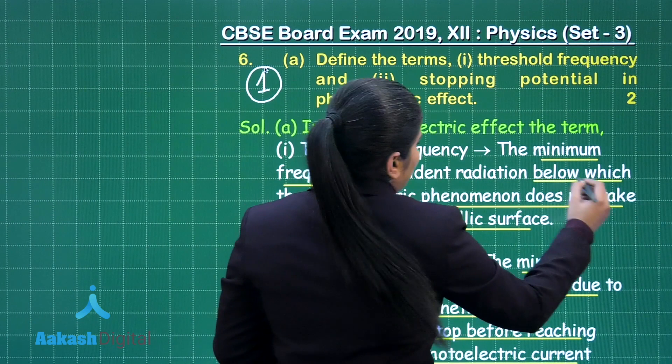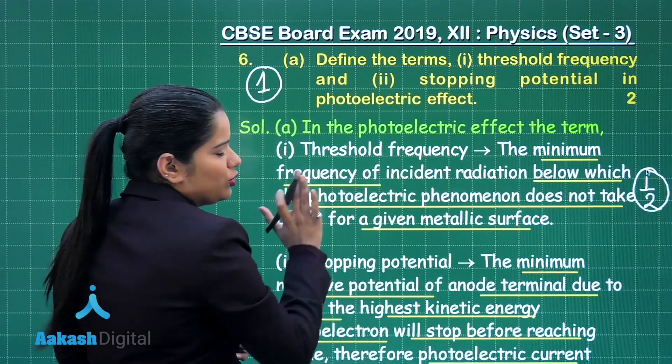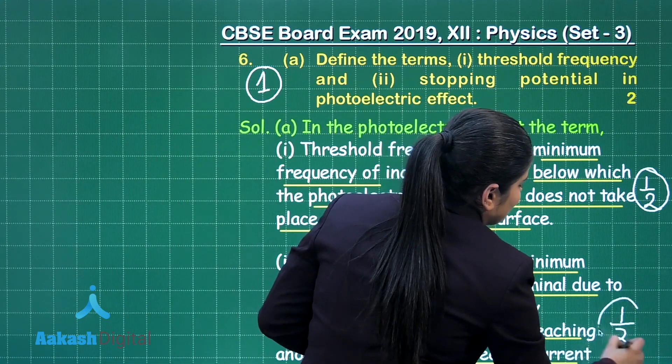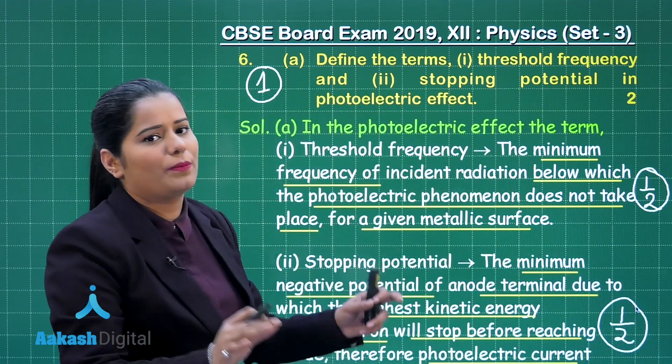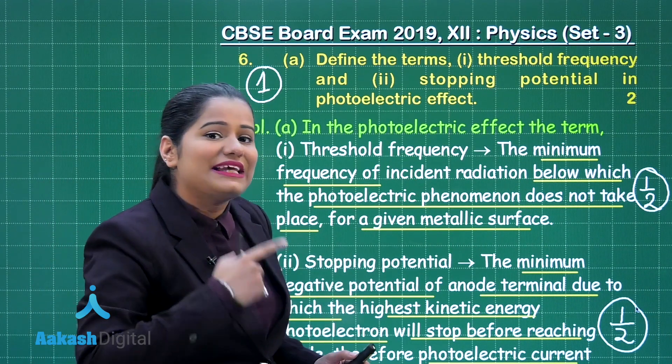So you are going to get half mark for writing the definition for threshold frequency and half mark you will get when you will write the correct definition of stopping potential.